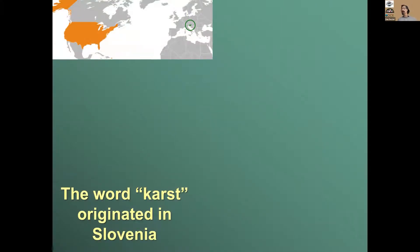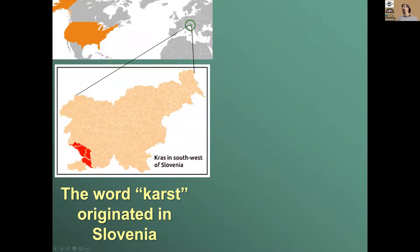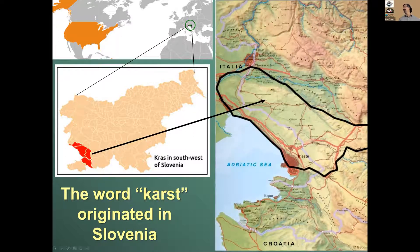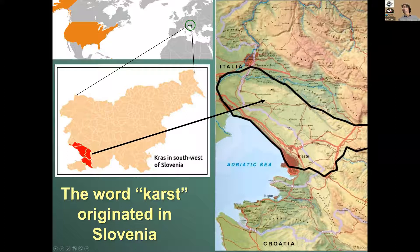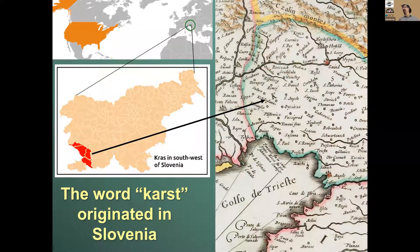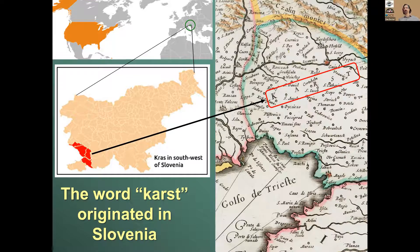Where does the word karst come from? It actually originated in Slovenia — it's a place name. There's an area in southwestern Slovenia called the Kras region, which borders Italy in the northeastern corner of the Adriatic Sea. It's a lovely plateau of limestone uplifted by tectonic processes. When the language of science in Europe was German, the Slovene term Kras was Germanicized into the term we now use internationally: karst. Just bear in mind that it's the place name, and that's where it comes from.